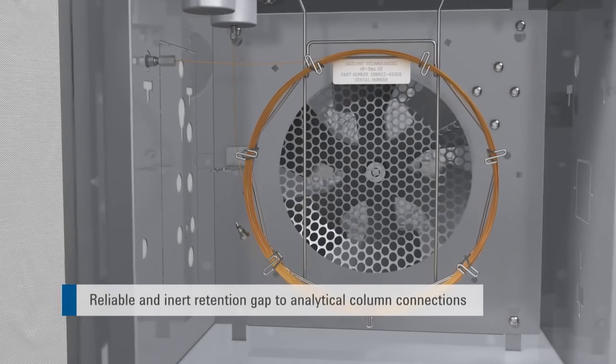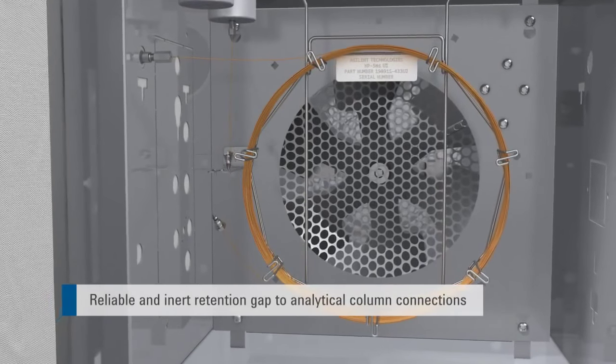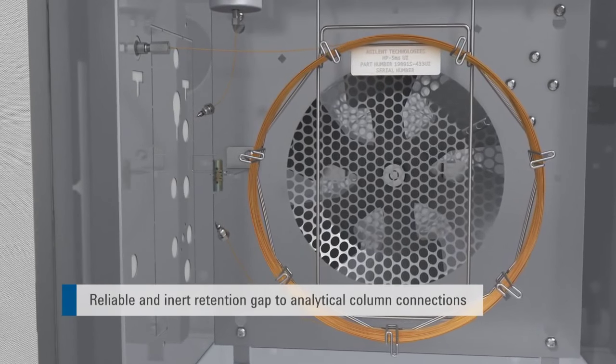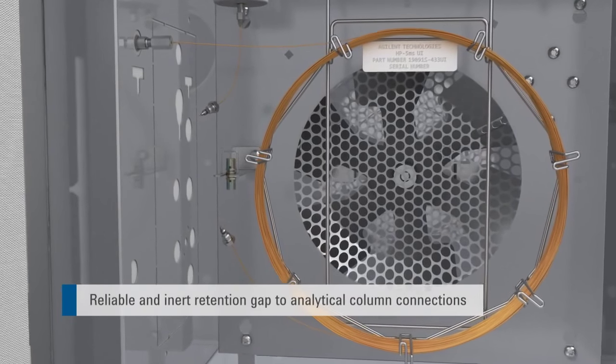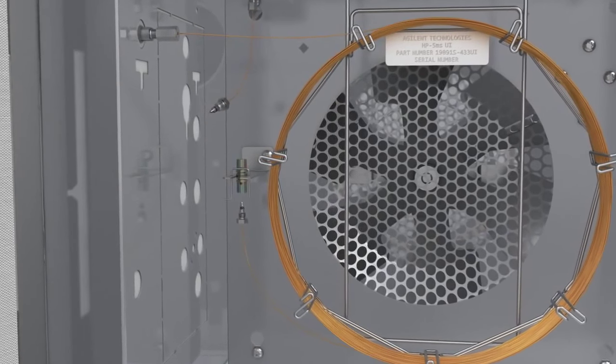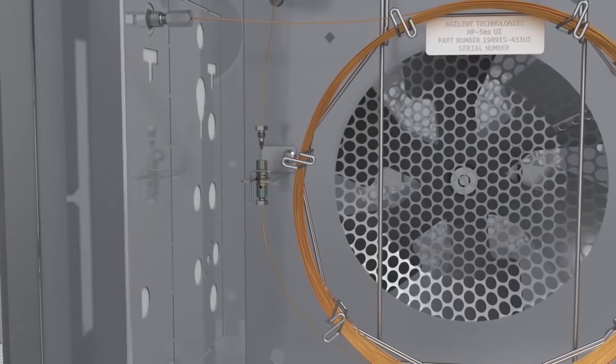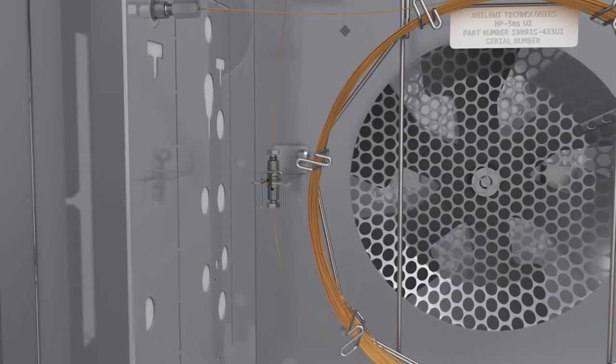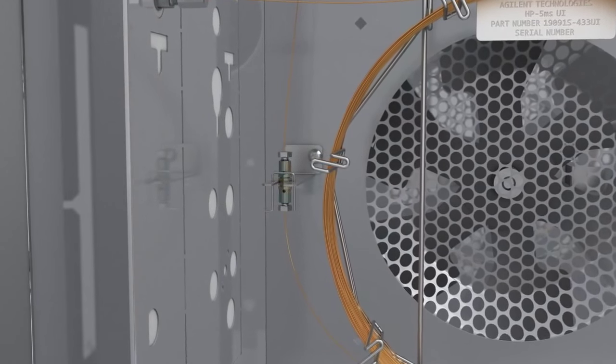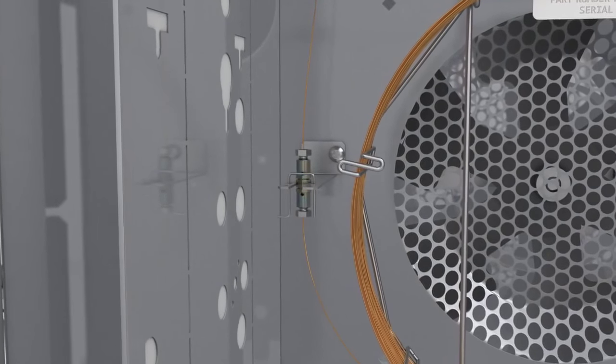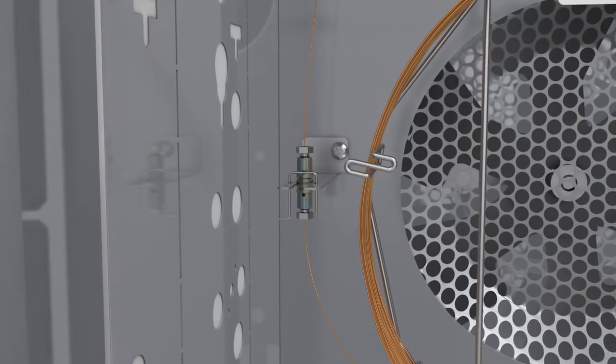Ultimetal plus flexible metal ferrules connect retention gaps with analytical columns using the Agilent ultimate union. Because the sample is exposed to the surface of the ferrules, the Ultimetal plus deactivation of the flexible metal ferrule is critical for recovery of active analytes. When using an ultimate union with flexible metal ferrules, robust, leak-free and inert connections are made when using retention gaps or guard columns.